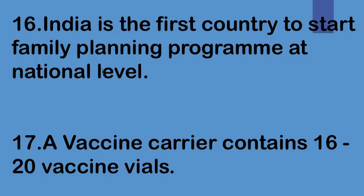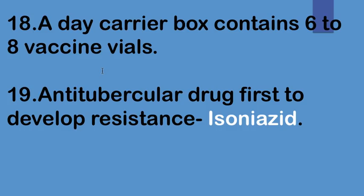India is the first country to start the family planning program at the national level. A vaccine carrier contains 16 to 20 vaccine vials. A day carrier box contains six to eight vaccine vials.